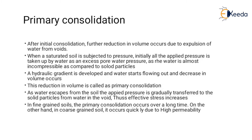The second stage of consolidation is primary consolidation. After initial consolidation, further reduction in volume occurs due to expulsion of water from voids when a saturated soil is subjected to pressure. Initially, all the applied pressure is taken up by water as excess pore water pressure. As water is almost incompressible compared to solid particles, a hydraulic gradient is developed and water starts flowing out, causing a decrease in volume. This reduction in volume is called primary consolidation.